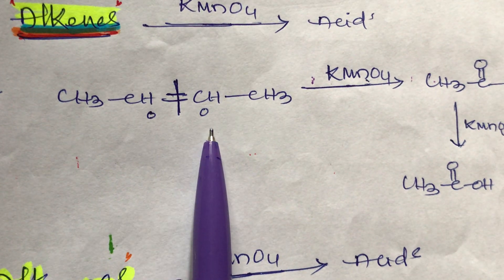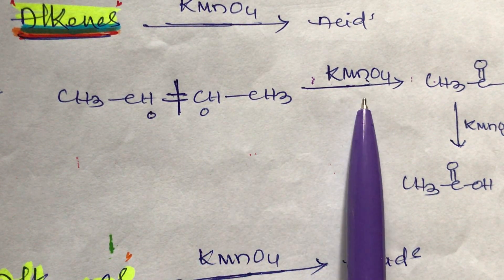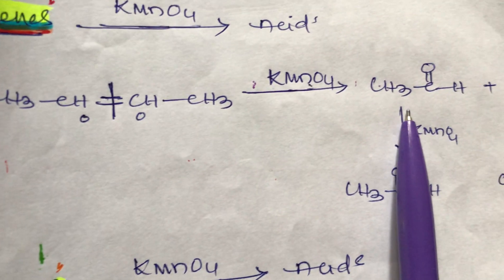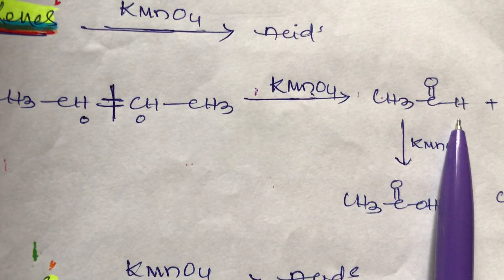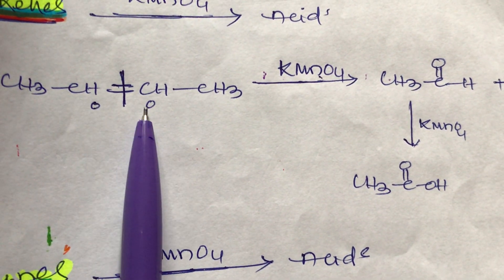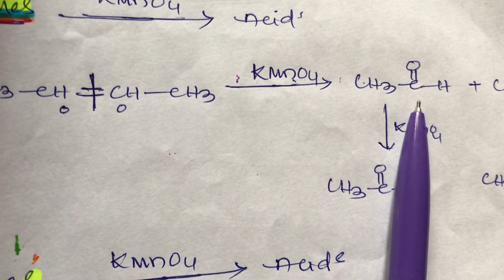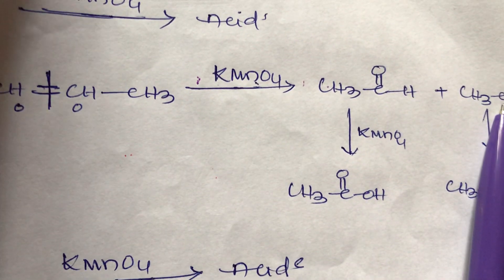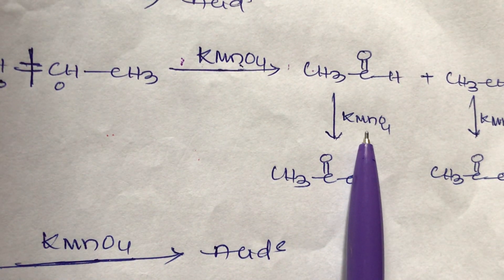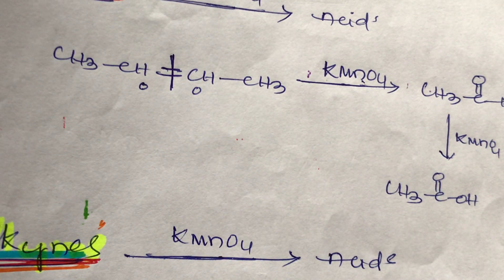For example, 2-butene reacts with KMnO4 via double bond cleavage. In the first phase, 2 moles of aldehyde are formed. The aldehyde is then again oxidized with KMnO4 to give acids. These are very, very important points for students.